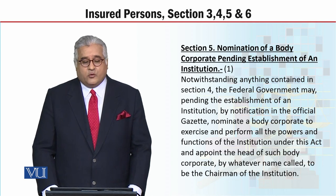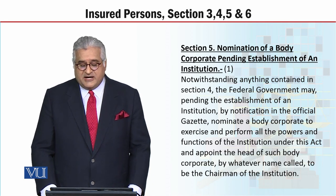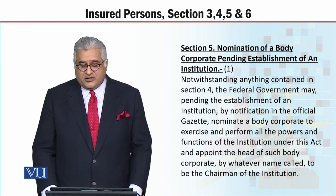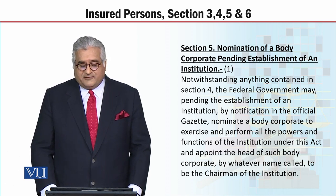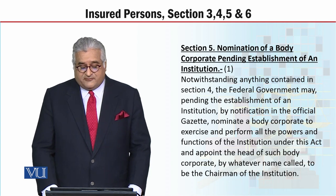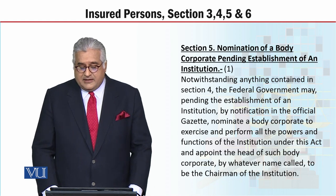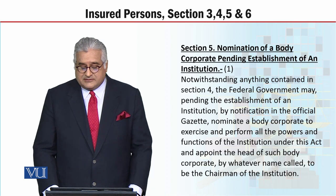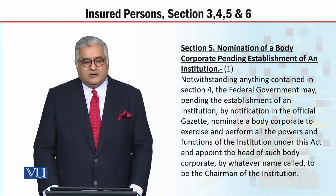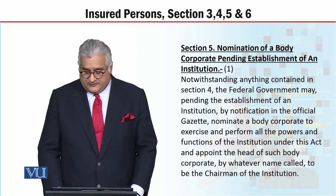Notwithstanding anything contained in Section 4, the federal government may, pending the establishment of an institution by notification in the official gazette, nominate a body corporate to exercise and perform all the powers and functions of the institution under this act, and appoint the head of such body corporate by whatever name called to be the chairman of the institution. Federal government notification karegi aur use official gazette mein publish karegi, aur ek body corporate ko appoint karegi ke wo powers ko exercise kare aur functions perform kare.